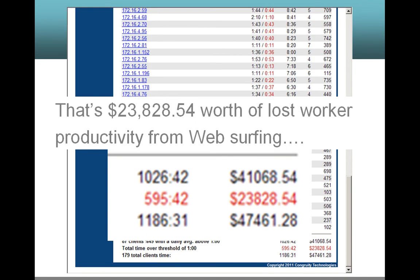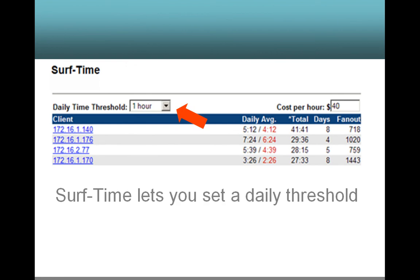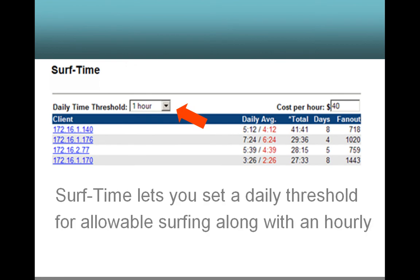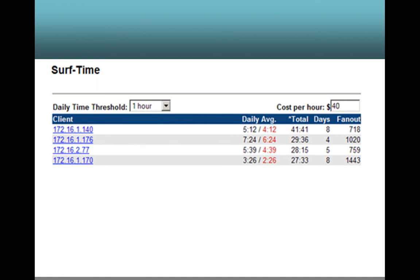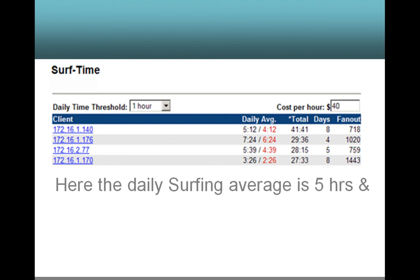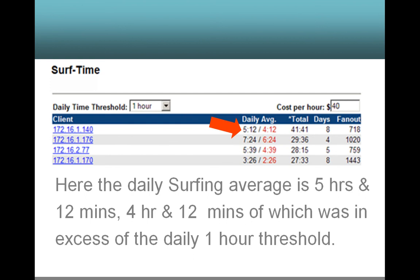That's $23,828.54 worth of lost worker productivity from web surfing. Surf Time lets you set a daily threshold for allowable surfing along with an hourly cost — both will dynamically update. Here the daily surfing average is 5 hours and 12 minutes, 4 hours and 12 minutes of which was in excess of the daily 1-hour threshold.